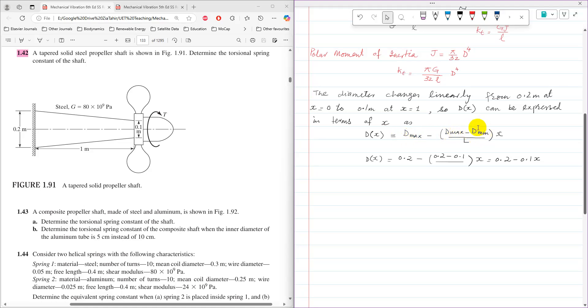So D maximum is going to cancel with D maximum so only left with D minimum. So when X equals L, then DX will be equal to D minimum. So that is expression of diameter written in terms of X. So by substituting the values of D maximum and D minimum, DX can be written as